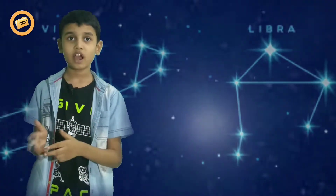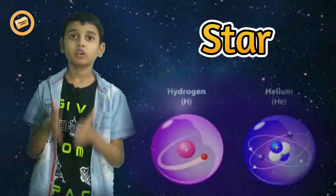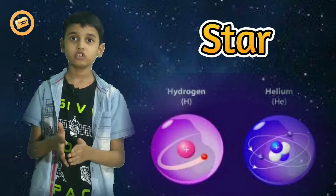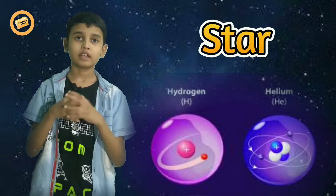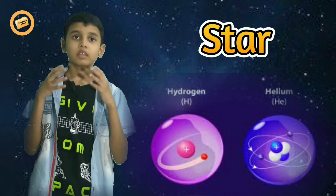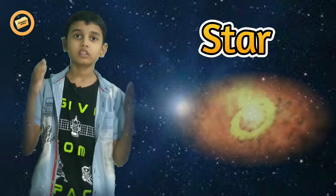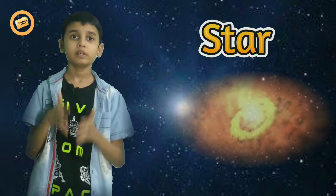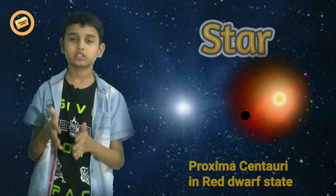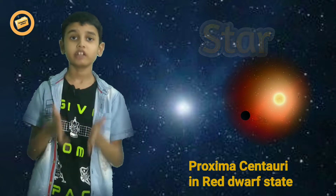A star is a luminous ball of gas, mostly hydrogen and helium, held together by its own gravity. These are huge balls of fire that appear as tiny dots of light. Proxima Centauri is the closest star to the sun. It is in a red dwarf state right now.